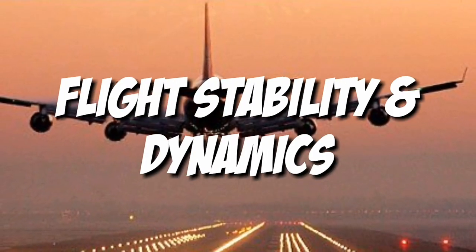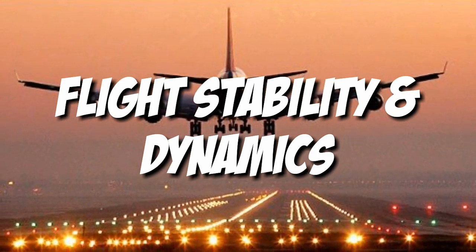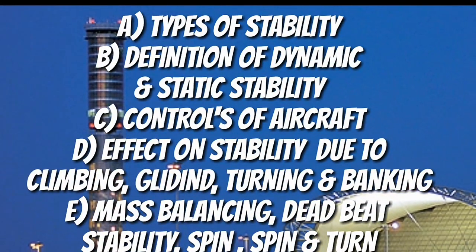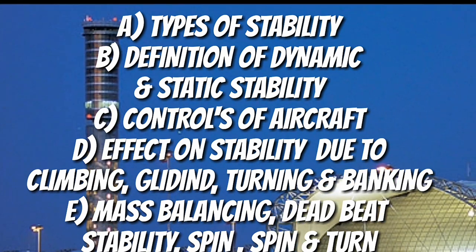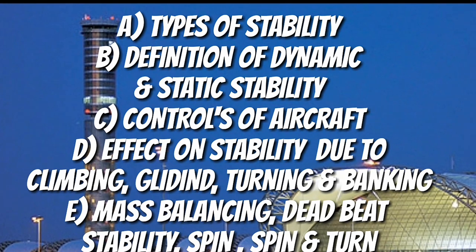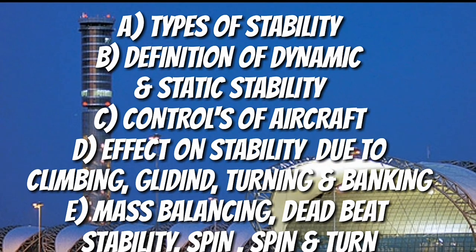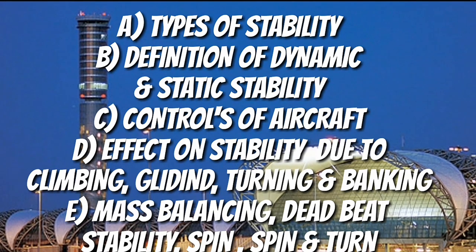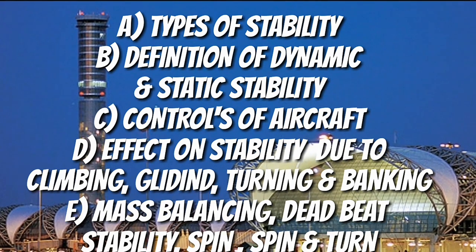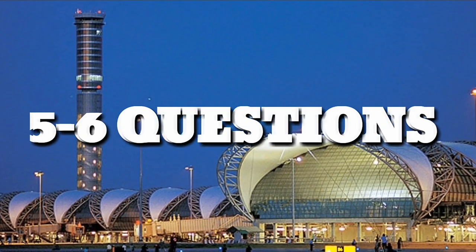Our final and most important topic is flight stability and dynamics, also called stability and control. Questions asked from this topic include types of stability, definitions of dynamic and static stability, the three axes of aircraft and their stability, controls of aircraft, during climbing which stability is affected, mass balancing, its relation with stability, spin, and turn. DGCA can ask about five to six questions from this topic, so study it well.